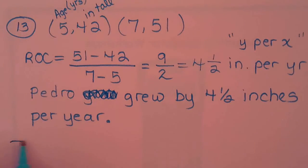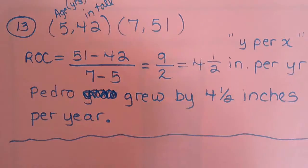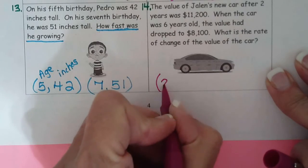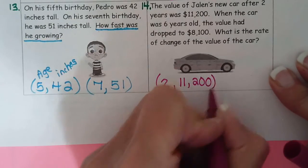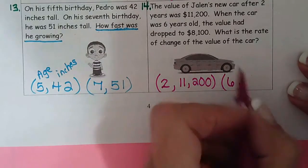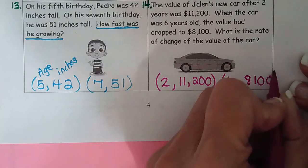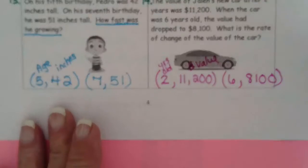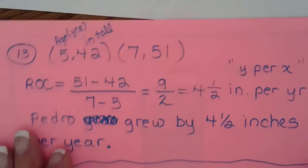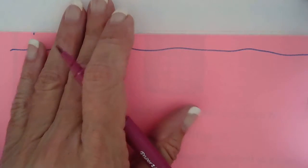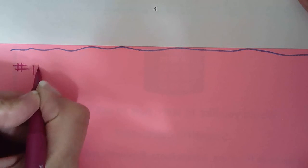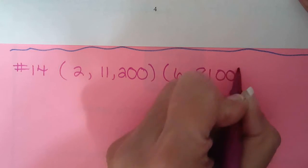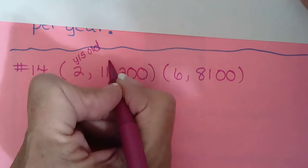Okay, we have about 2 minutes, so I'm going to do this last one quick so I don't have to make another video just for one problem. So I might have to stop it if I'm going too fast. So Jay Lynn's new car after 2 years, so time is always our x, 2 was worth $11,200. When the car was 6 years old, the value had dropped to $8,100. So this is how old it was, years old, and this was dollars in value. Okay, so let's transfer that over.